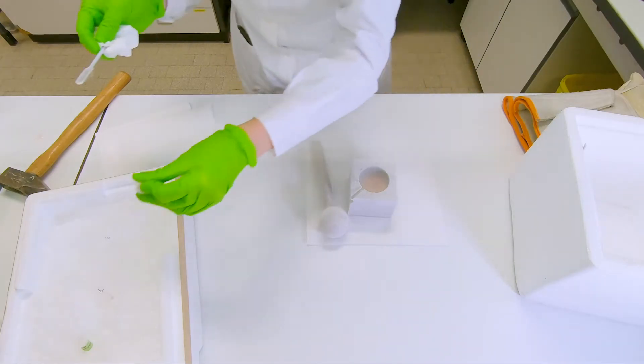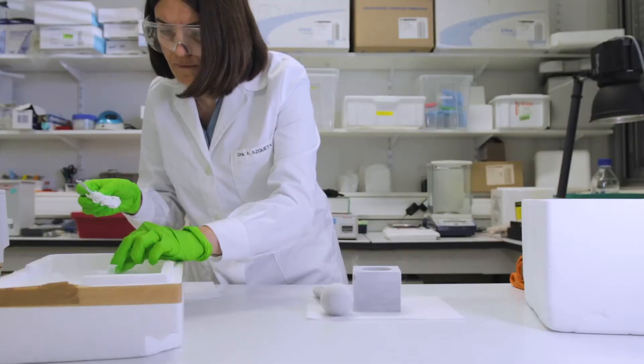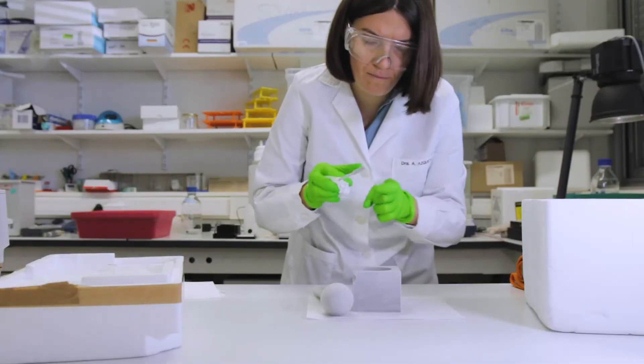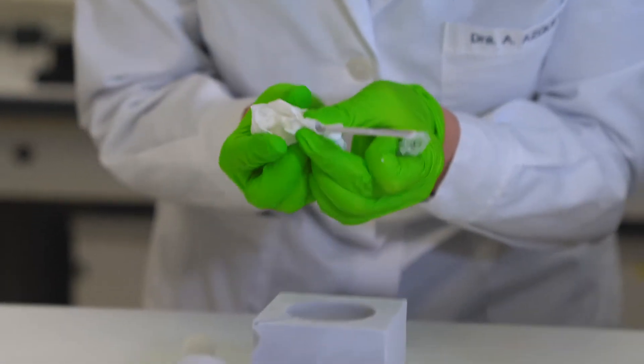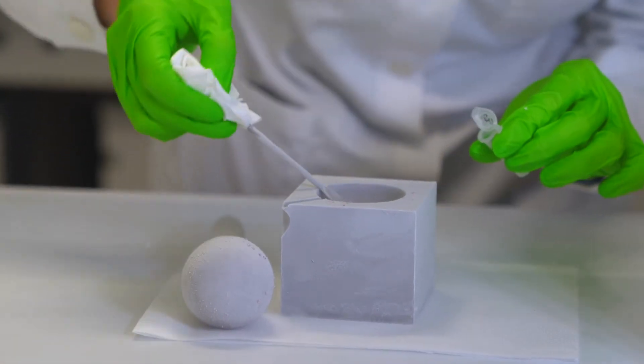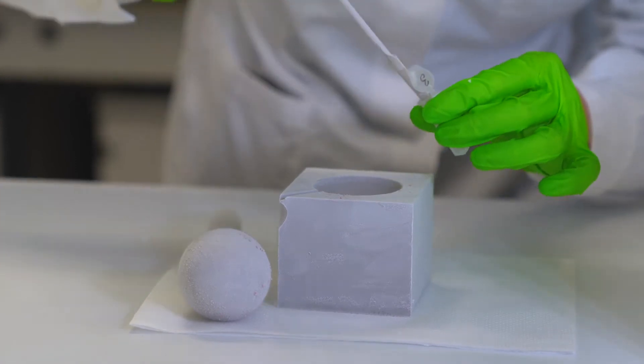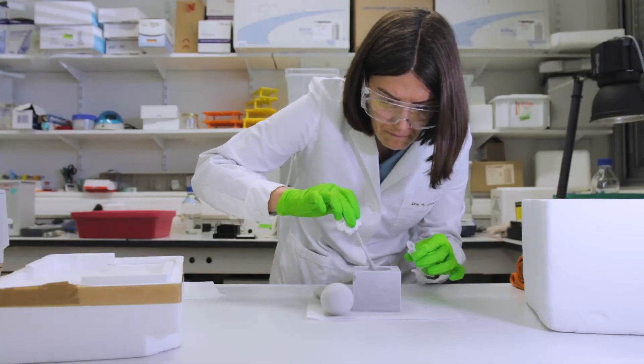In case the spatula would catch too much humidity, you can either wipe it and put it back in the liquid nitrogen, or you can take another spatula. I usually put a second spatula in the liquid nitrogen, just in case as a backup.